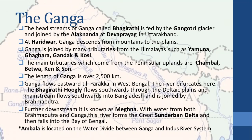Ganga is joined by many tributaries from the Himalayas, such as Yamuna, Ghagra, Gandak, and Kosi. The main tributaries which come from the peninsular uplands are Chambal, Betwa, Son, and Ken. The length of the Ganga is over 2,500 km.